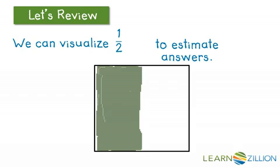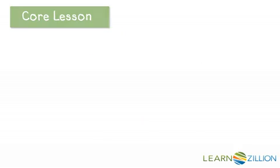Then after we find our answer, you can judge the accuracy of your answer and think: if I thought it was going to be a lot larger and it turned out to be smaller than one half, then I may want to go back and look at my answer again. So we're not going to be solving any problems today — we're just going to be starting to think about how we estimate our answers.